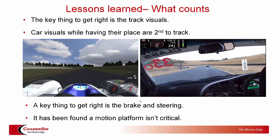Lesson learned: what counts. The key thing to get right is your track visuals. It is absolutely imperative that the visual model replicates the major circuit features. You don't need it down to the nearest pine needle, but it must represent all the key features on the track. As you can see here, this is a ChassisSim Driver in the Loop model alongside footage from the actual car — the major visual features are represented. Some differences exist, partly due to non-wet conditions and an Australian drought, but the key points have been captured.